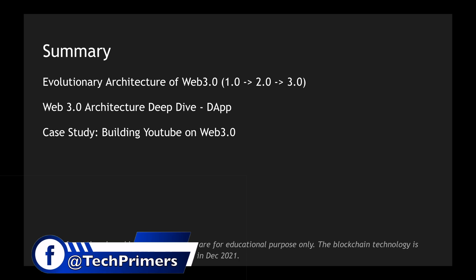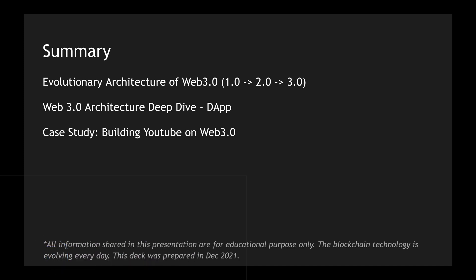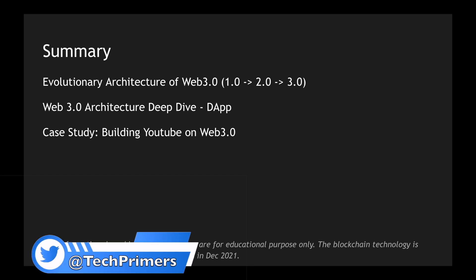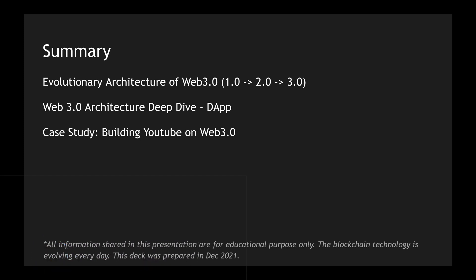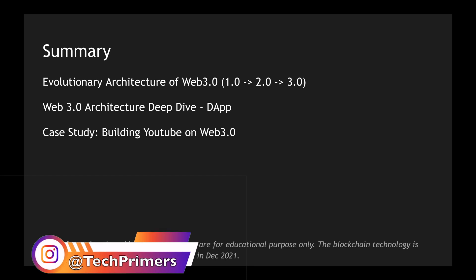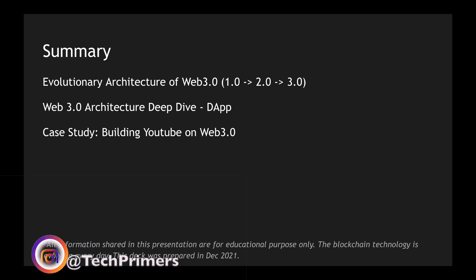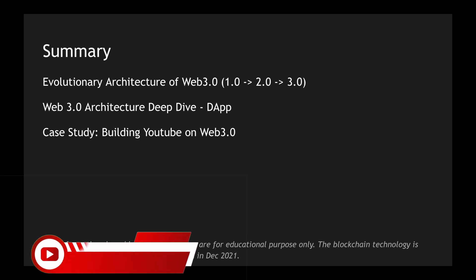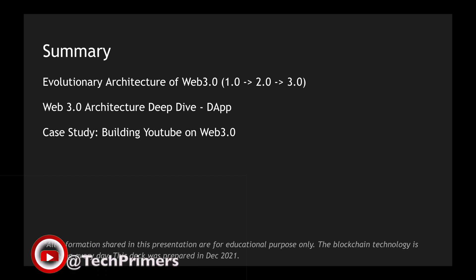To summarize: we saw the evolution of the internet — Web 1.0, 2.0, and 3.0. Web 3.0, a concept created by Ethereum, lets you deploy applications in a decentralized form. We did an architecture deep dive, saw a dApp example with TechPrimers.com, and discussed the case study of building YouTube using the Web 3.0 architecture. I hope this video clarified Web 3.0 and how you can deploy applications on the blockchain. If you liked the video, please like and subscribe — see you in the next video!